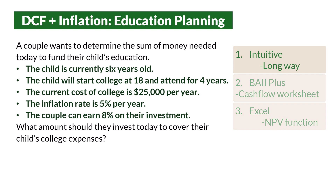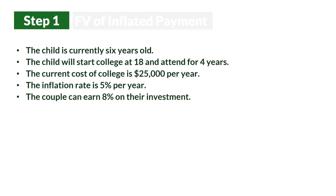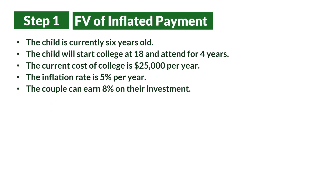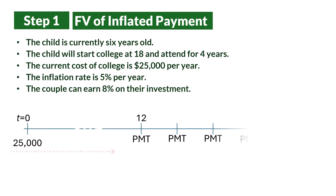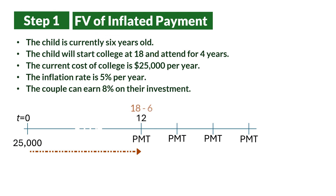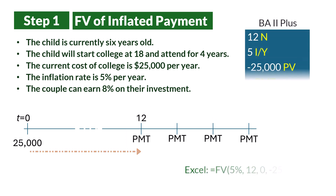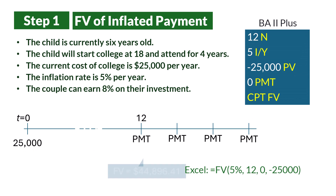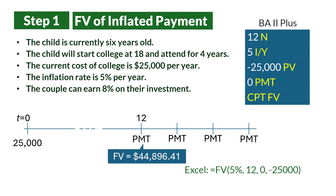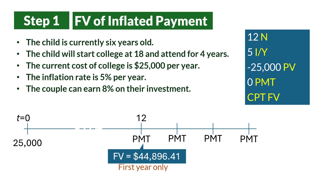The intuitive approach will involve three steps. Step 1: we find the future value required at the start of college by inflating the $25,000 for 12 years — 12 years because the child is currently 6 years old and we start college at 18, so 18 minus 6 is 12. We only expect to make payments in these 4 years starting from year 12. Using the BA2 Plus or Excel, the future value is computed to be $44,896.